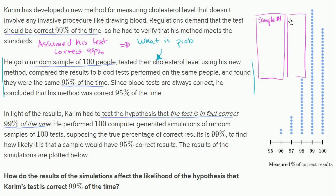There are going to be 100 samples in total, and there are 100 people in each sample, going all the way to the 100th person.